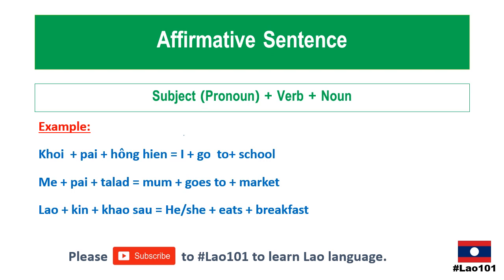For the affirmative sentence, usually in Lao the sentence will begin with a subject, and the subject is usually a pronoun. You can go back to the pronoun lesson to see how we say pronouns for different people, because in Lao language we usually refer to people as sister, brother, uncle, aunt, or if younger you could say 'nong'. For affirmative sentences it usually starts with pronoun, then the verb for actions, and then the noun — sometimes it could be a date, adjective, and clarification, but this is the basic one.